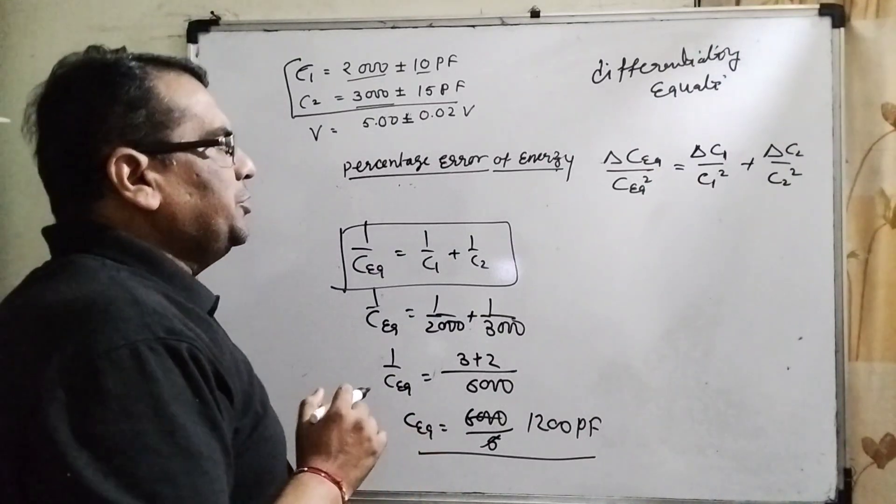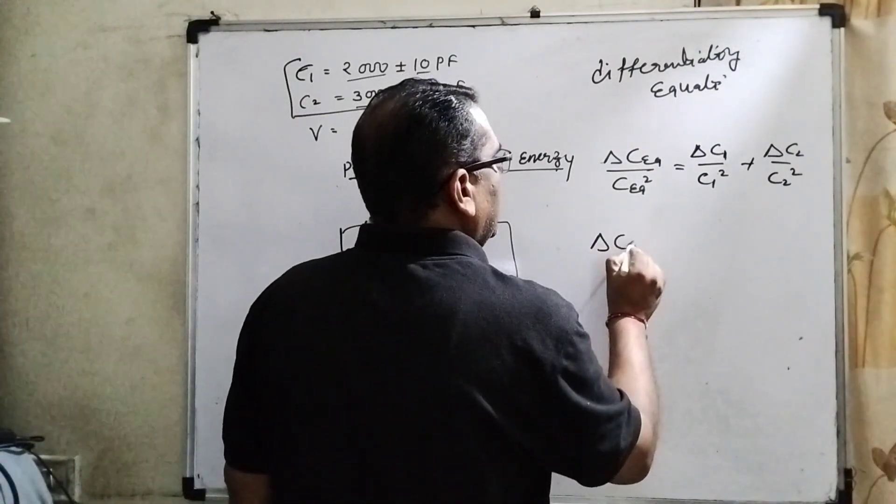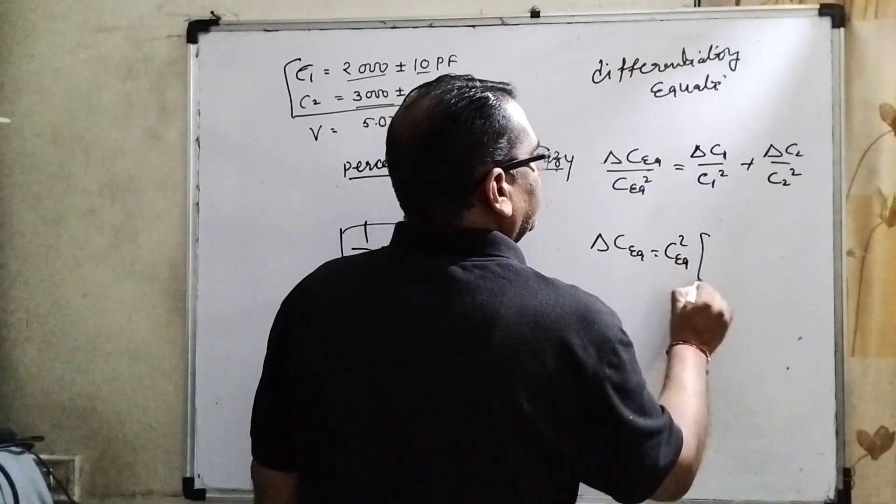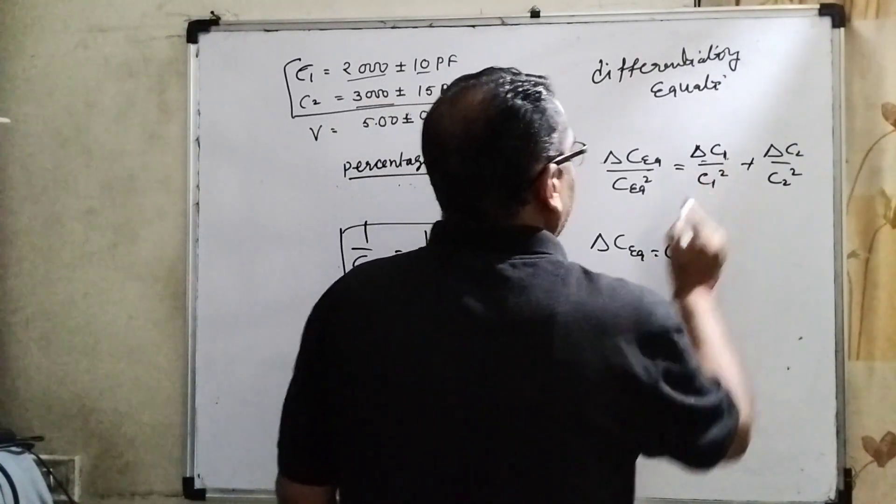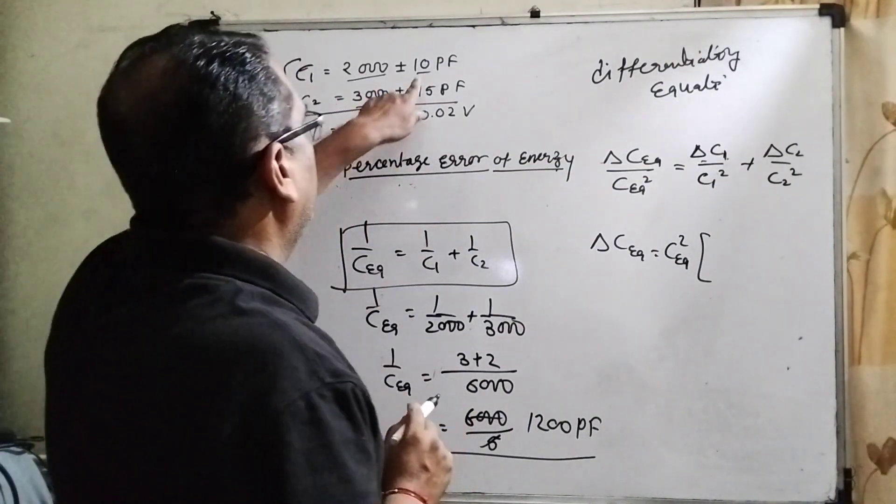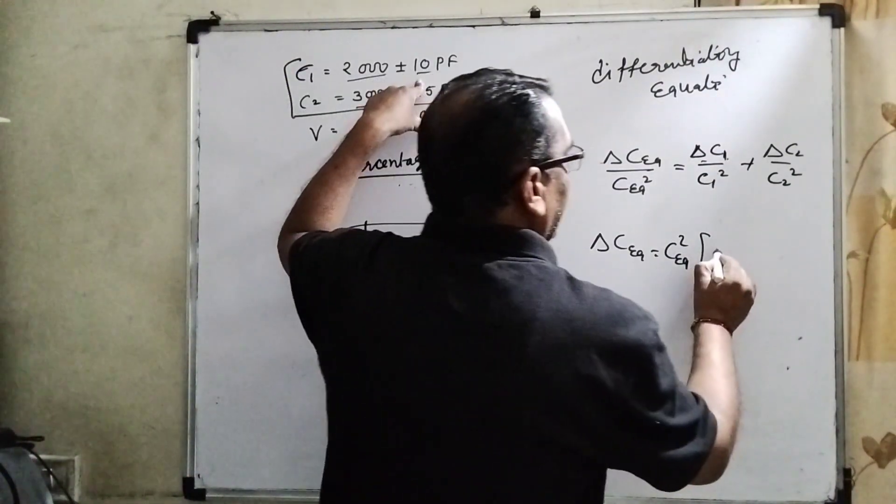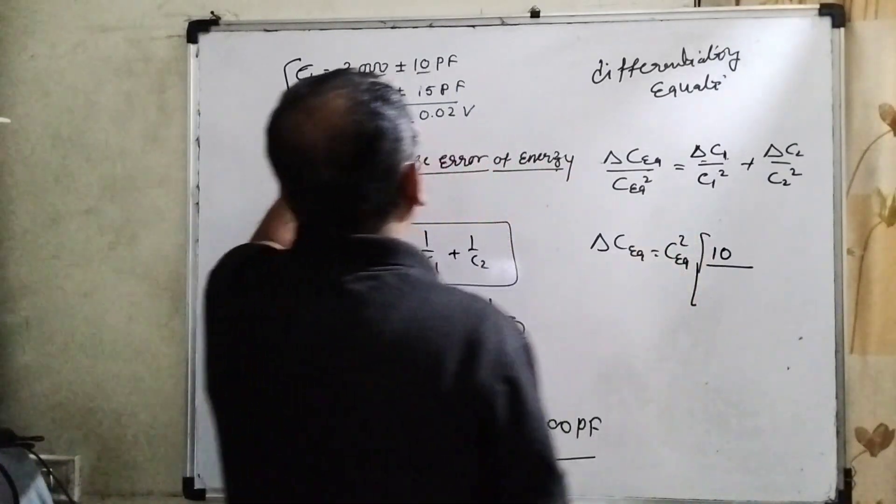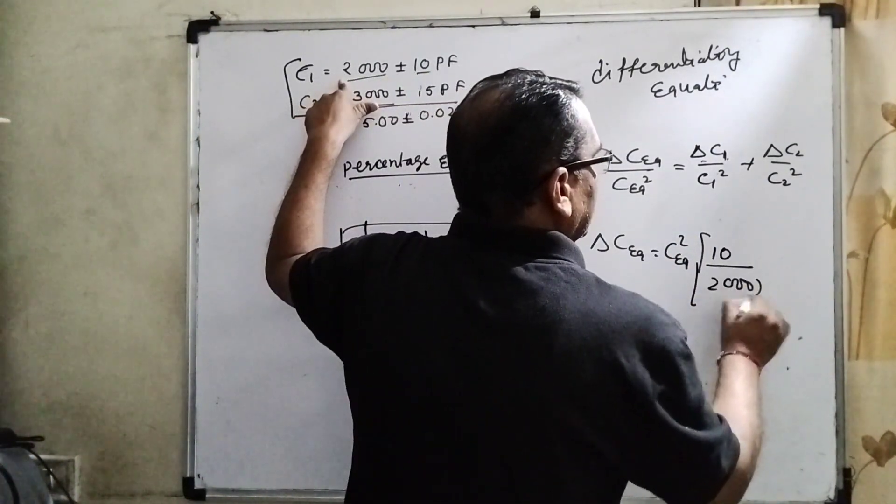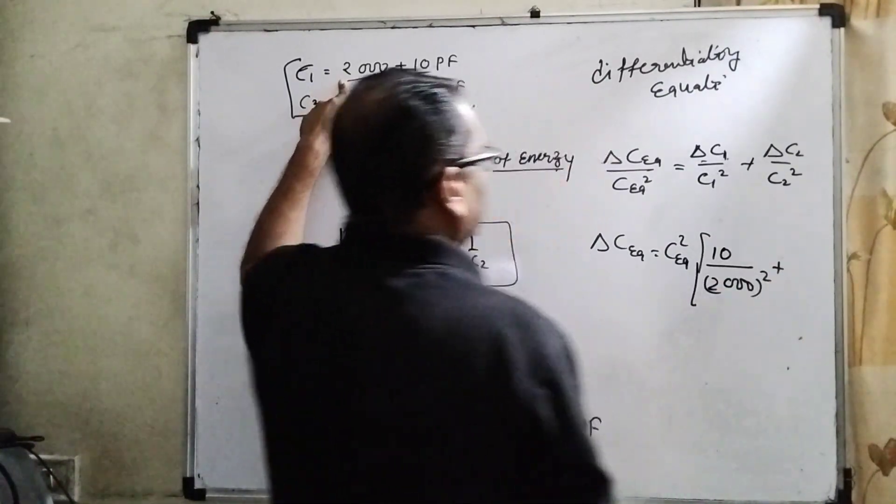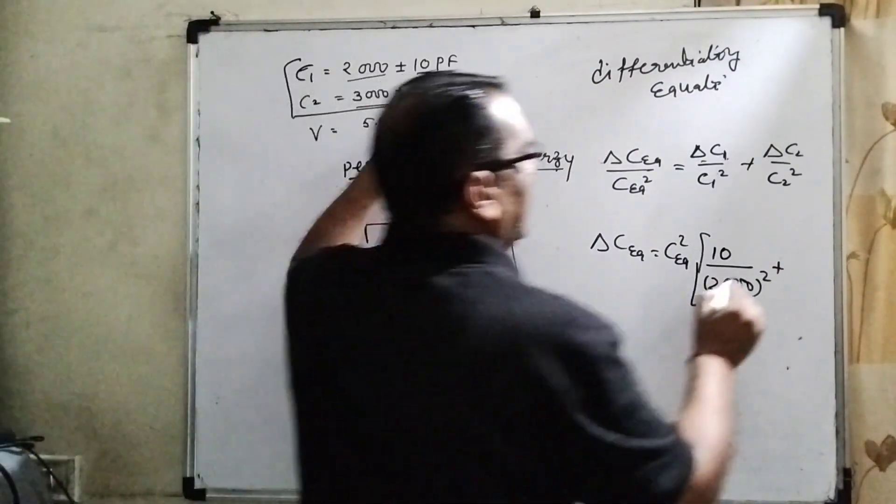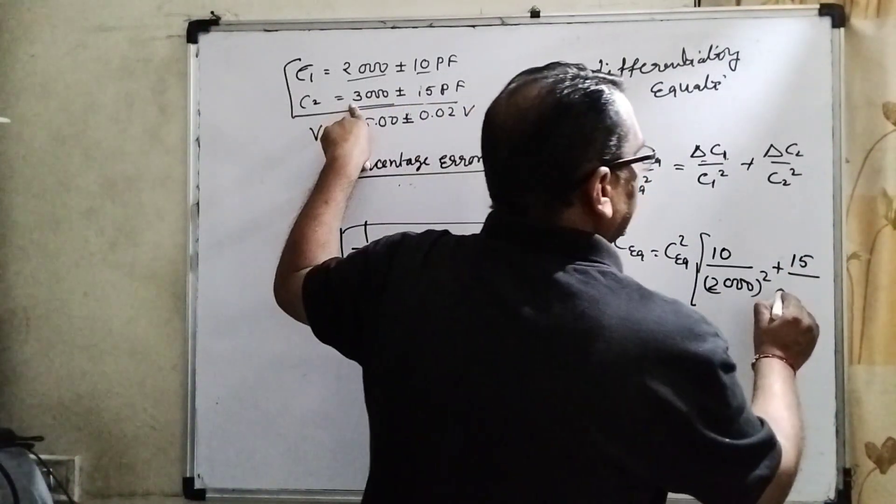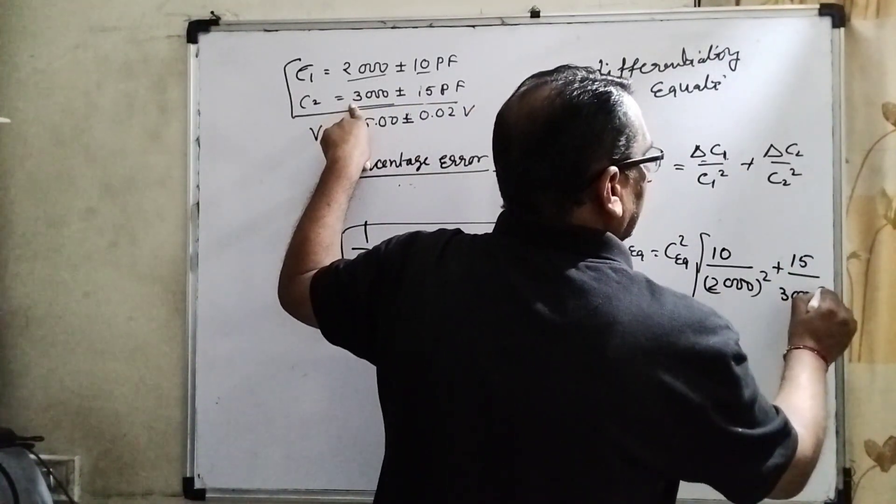Now substitute the values: delta C_eq upon C_eq squared. Delta C1 is 10 picofarad upon C1, which is 2000 squared, plus delta C2 is 15 upon C2, which is 3000 squared.